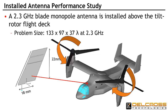At 2.3 GHz, our tilt-rotor aircraft is about 133 by 97 wavelengths in size and nearly 37 wavelengths high. This would be a very large and long problem to analyze using traditional full-wave EM analysis software tools. Savant solves problems like this very efficiently on a typical desktop computing system.